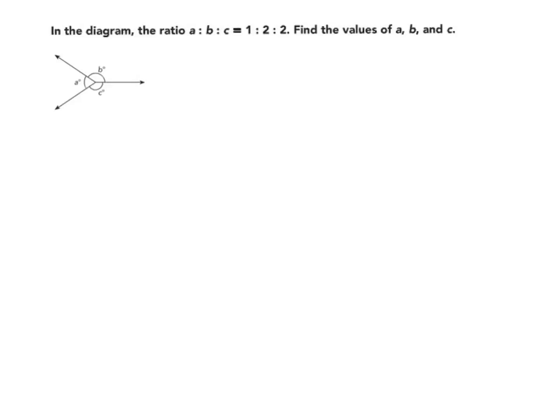There's another method that I can use to solve this problem. I can use algebra. So I can use a variable to represent the measure of the angle. B would equal 2A, and C would also equal 2A. And I know that the measure of angle A plus the measure of angle B plus the measure of angle C have to equal 360 degrees since they all share a common vertex.